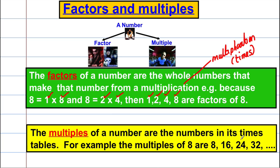The multiples of a number are the numbers in its times tables. For example, the multiples of 8 are: 1×8=8, 2×8=16, 3×8=24, 4×8=32 — and this goes on forever. There are infinitely many multiples, whereas there are only a finite number of factors. 'Multiple' means many of the number — they're the numbers in that number's times tables.